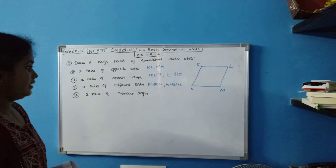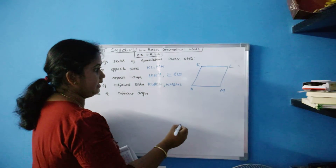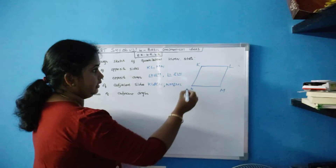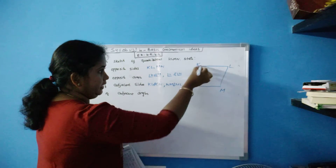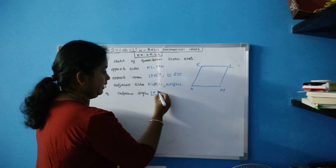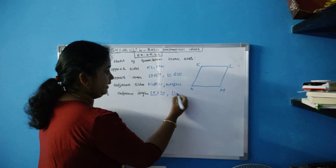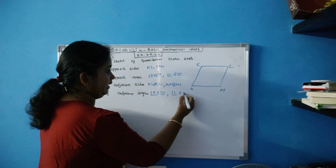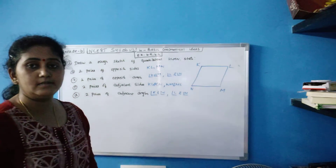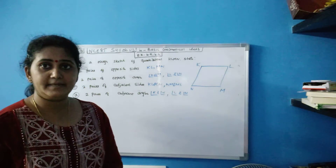Next, two pairs of adjacent angles: angle K and angle N is one pair, and angle L and angle M is another pair. So this is two pairs of adjacent angles. Now with this, your exercise 4.5 is completed.